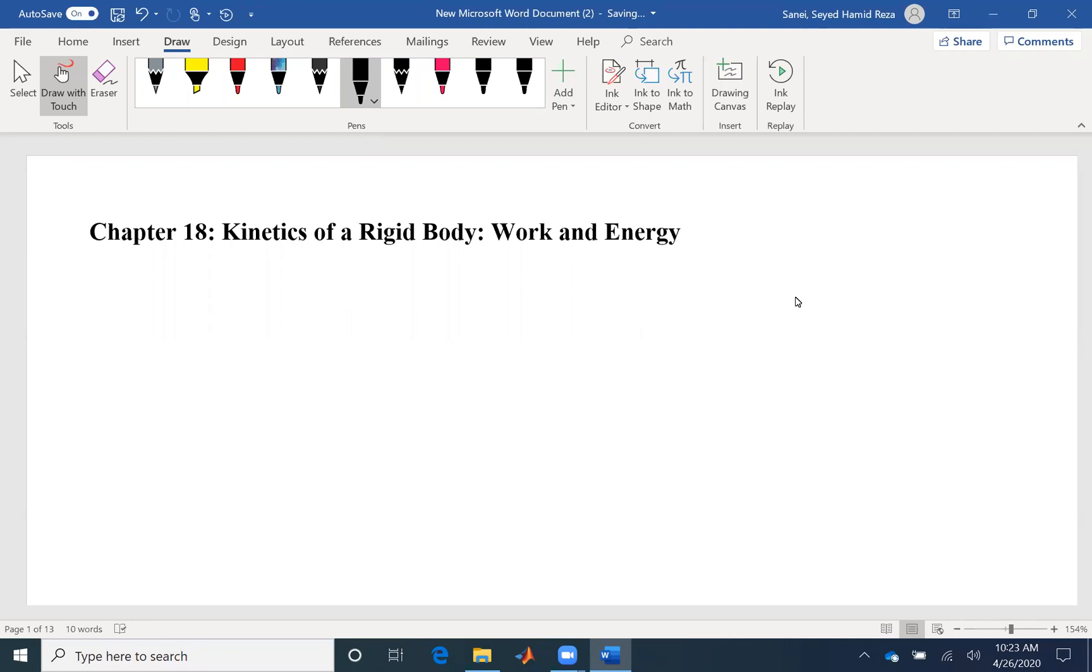In the previous chapter, we talked about kinetics of a rigid body using kinetic equations, which were summation of forces equals mass acceleration of center of gravity and summation of moment IG alpha.